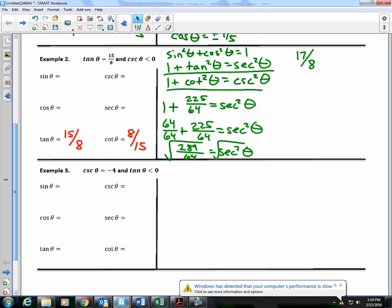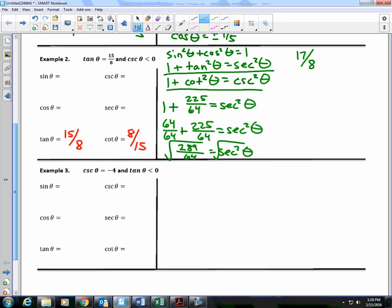So, secant, I'm going to write 17 over 8, but here's the problem. Is it positive or is it negative? Let's set up our chart. All students take calculus. Let's look at our results. Is the value of tangent positive or negative? It is positive. Tangent is positive for the first quadrant and the third quadrant. So I know I'm either in the first or the third.